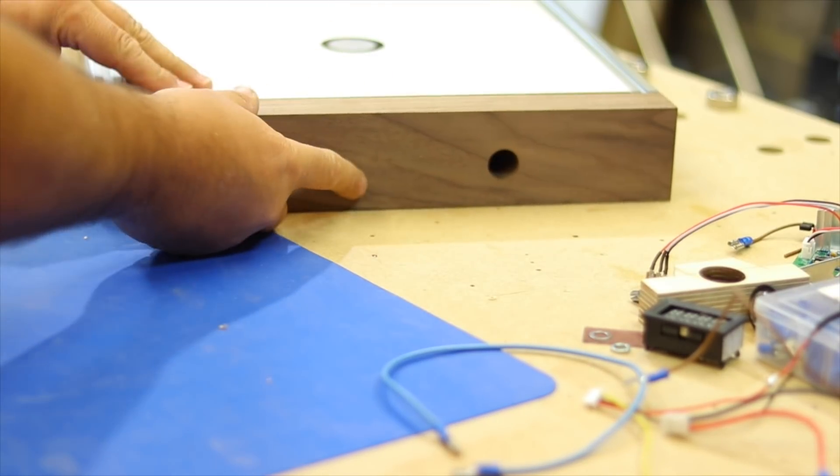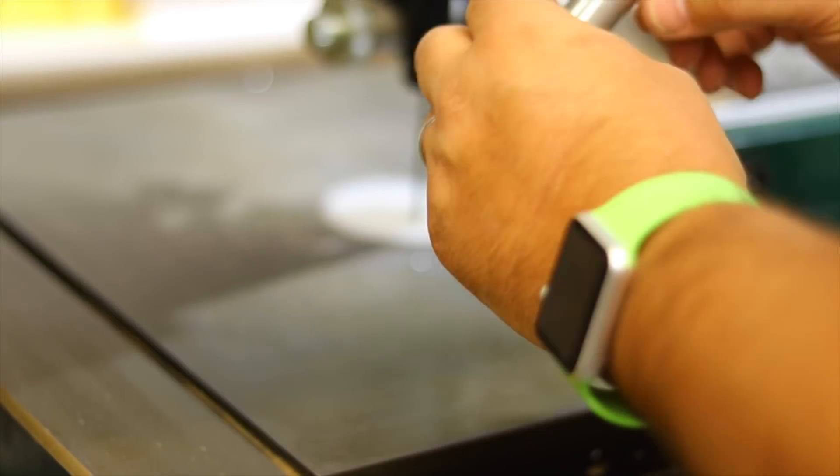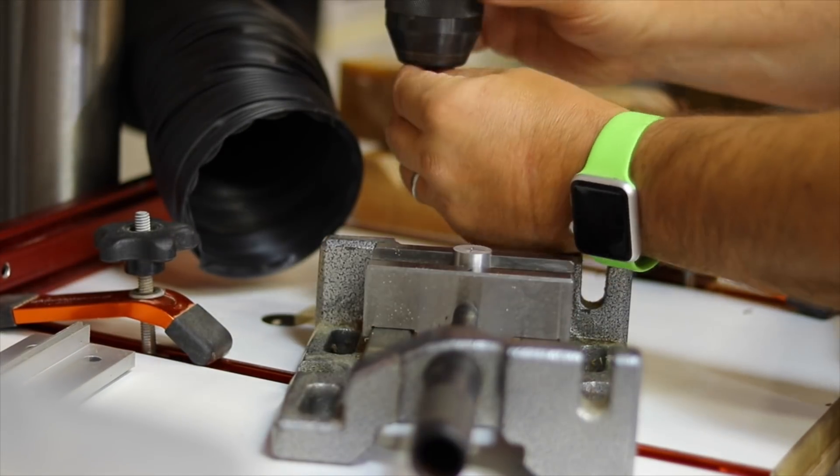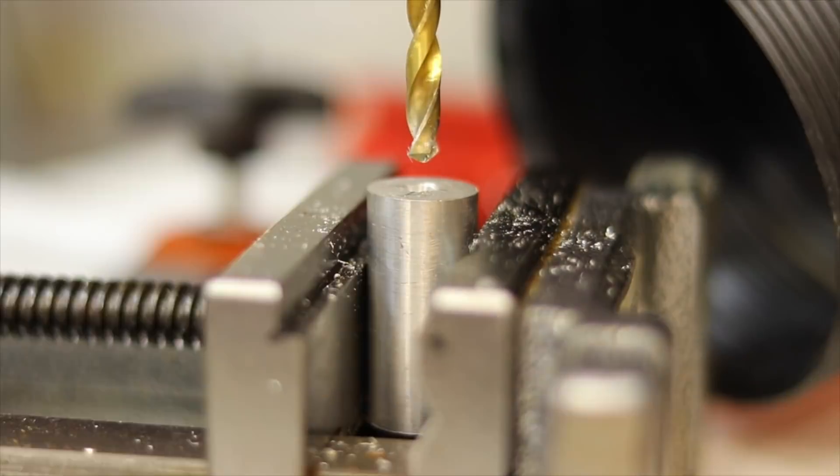The two holes are for the on-off button and for the potentiometer to adjust the amps. Now I'm just cutting the stock for the potentiometer and drilling a hole into the top of this piece of aluminum so that I can glue in or epoxy in the potentiometer, and then just polishing it up.